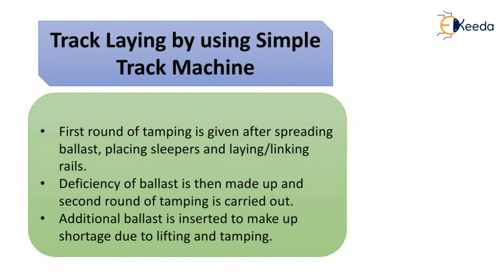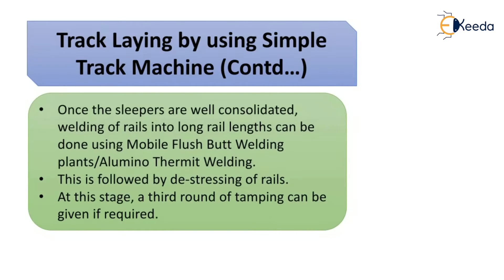Track laying using a simple track machine: the first round of tamping is given after spreading ballast, balancing sleepers, and laying rails. The deficiency of ballast is then made up and a second round of tamping is carried out. Additional ballast is inserted to make up shortages due to lifting and tamping. Once the sleepers are well consolidated, welding of rails into long continuous welded rails can be done using mobile flash butt welding plants or thermite welding, followed by de-stressing of the rails and a third round of tamping.